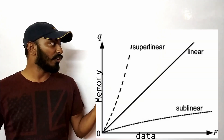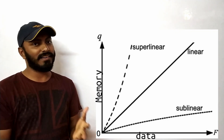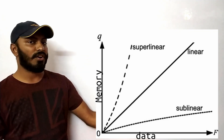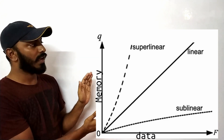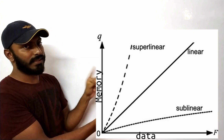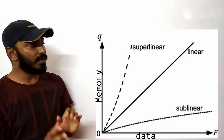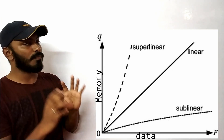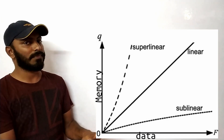You must be thinking, what is sublinear? Look at this graph to understand more. The definition of linear is: as the data increases, the space or memory consumption also increases in the same way — there is a direct relationship. The sublinear, on the other hand, doesn't consume as much memory; it uses less than half or something like that.